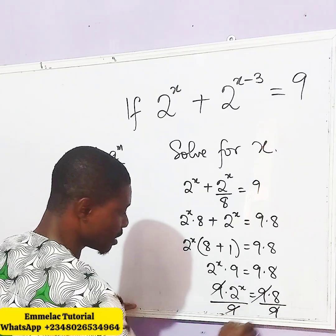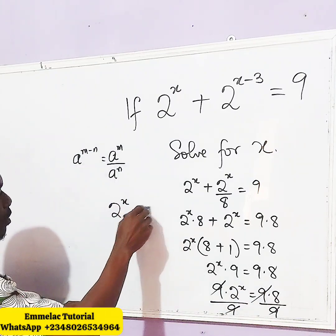This eliminates this. This eliminates this. So, we have left with what? 2 raised to x equals 8.